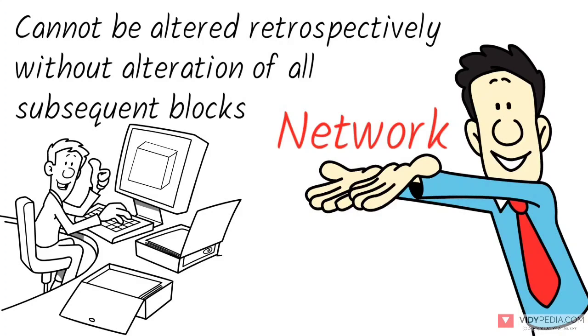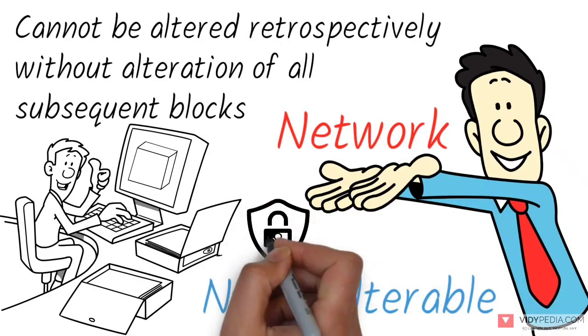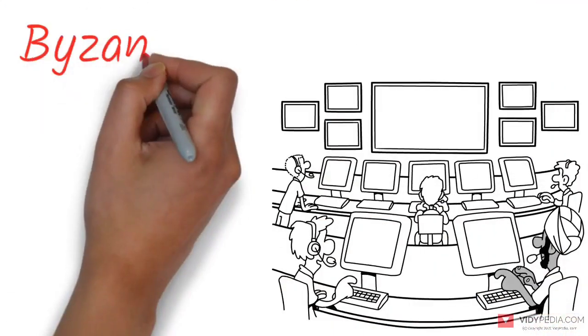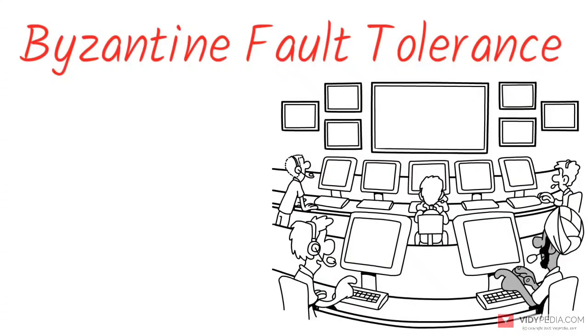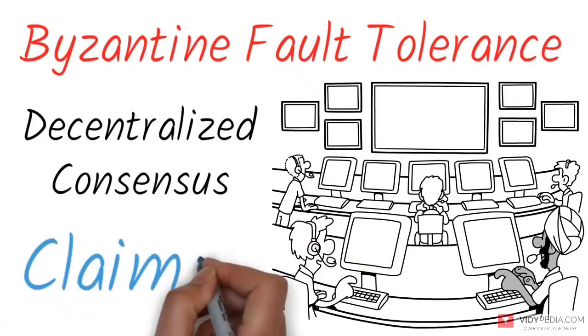As blockchain records are not unalterable, blockchain is considered secure and exemplifies a distributed computing system with high Byzantine fault tolerance. Decentralized consensus has therefore been claimed.